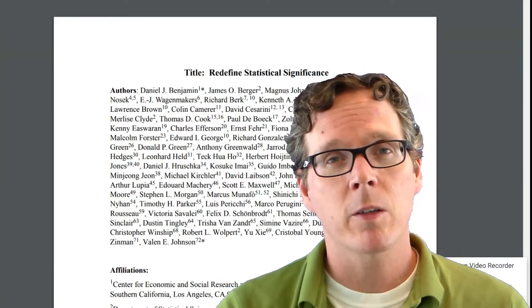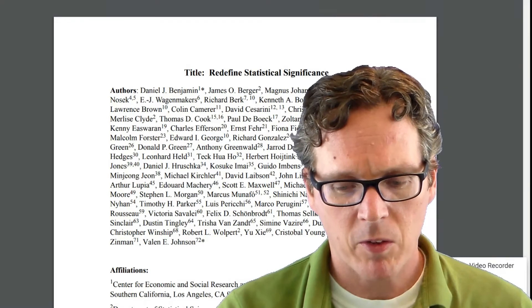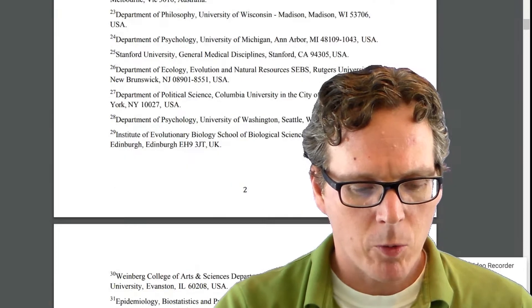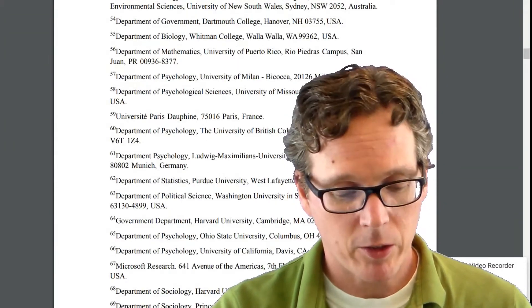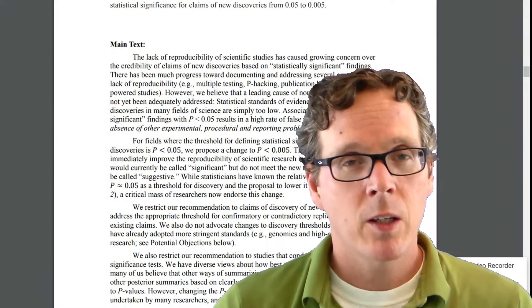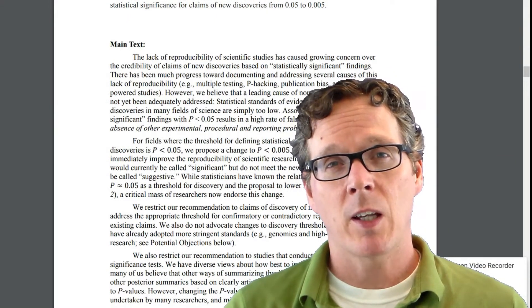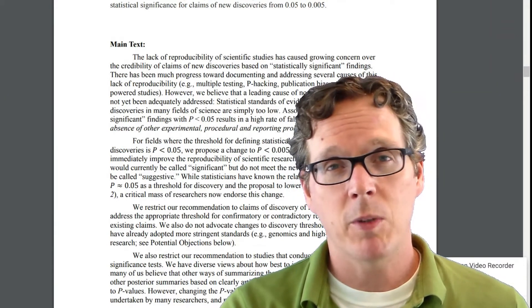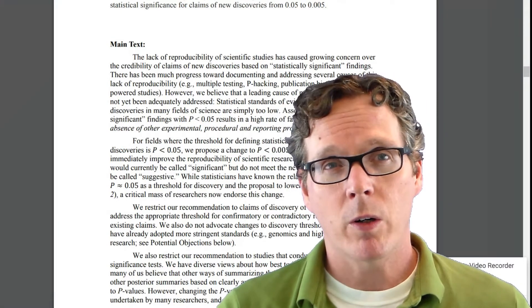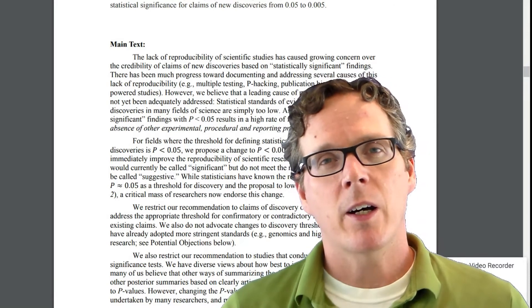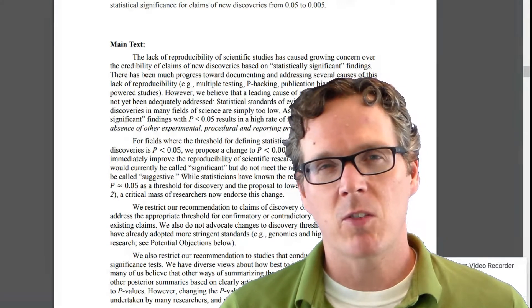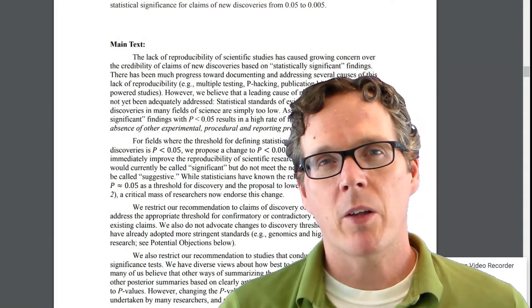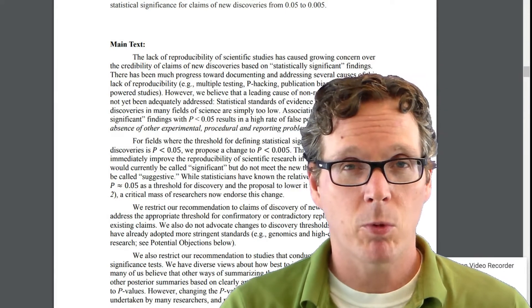And so let's go through the arguments they make, or at least some of the arguments they make, and then talk about some of the criticisms. So first of all, I want to mention I don't really think this paper is about p-values. It is about type 1 error rates and statistical hypothesis testing and about trying to create a more strict threshold.